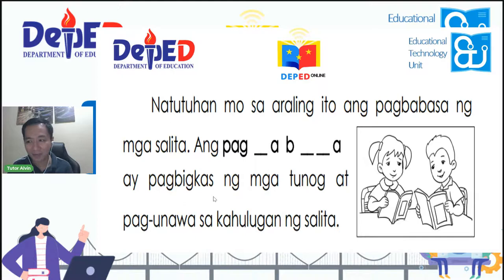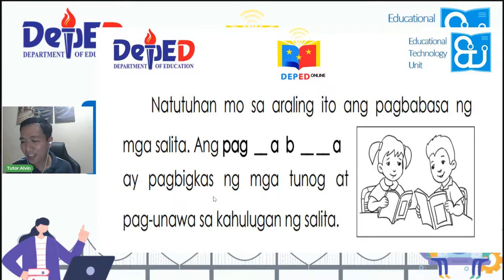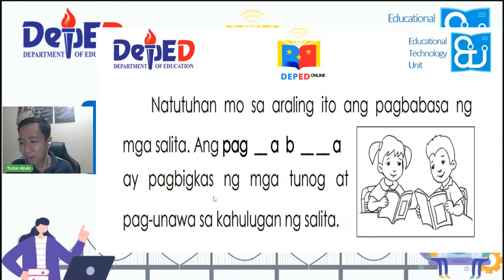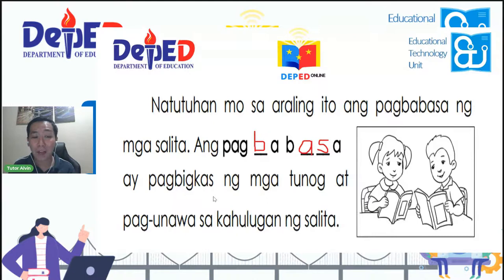Ano kaya ang hinahanap? Ang puwang ay pagbigkas ng mga tunog at pag-unawa sa kahulugan ng salita. Sa inyong palagay, ano kaya ang nawawala? Sabi ni Marilu: pagbabasa. Sabi ni Kirby: pagbabasa. Sabi ni Shermay Trace: pagbabasa po. Sabi ni Jana: pagbabasa. Sabi ni Jedro: pagbabasa. Tama ang inyong sagot. Ang pagbabasa ay pagbigkas ng mga tunog at pag-unawa sa kahulugan ng salita.